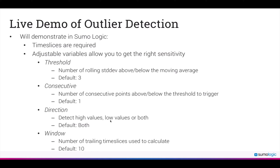Here are the tunable parameters. In the outlier operator you can define a threshold value — if you don't want the default of three, you can change it to four, five, six, or even one or two, depending on how sensitive you want the alerts to be. The 'consecutive' parameter identifies and alerts you if multiple data points are hit versus just one outlier. For 'direction', you can separate whether you want just low values, high values, or leave it at default for both. The 'window' is the number of trailing time slices used to calculate the baseline, with a default of 10.